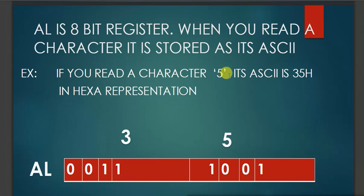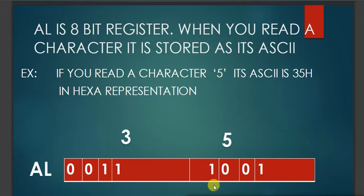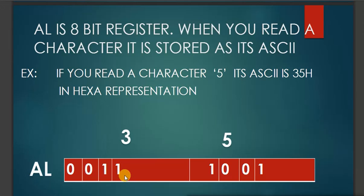Look at how hexadecimal representation helps us operate with binary bits. When we press '5', it is stored in the AL register, which is an 8-bit register — two groups of 4 bits each. The value 35 hex is stored as: 3 is represented in binary as 0011, and 5 is represented as 0101, giving us 8 bits total.